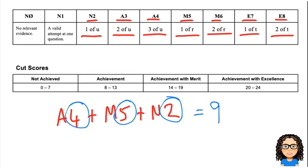Then I look at my cut score and say, right, the value of 9 is in this range here, 8 to 13. So overall for the exam, I would be getting an achieved, if that's all my scores.